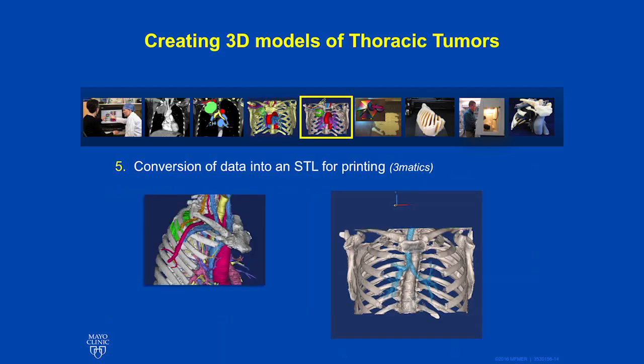Each STL file is a separate color. We utilize certain software programs called Blocking or Multiple Slice Edit. Multiple Slice Edit looks at three planes to get the best view of the tumor and create the final 3D image.